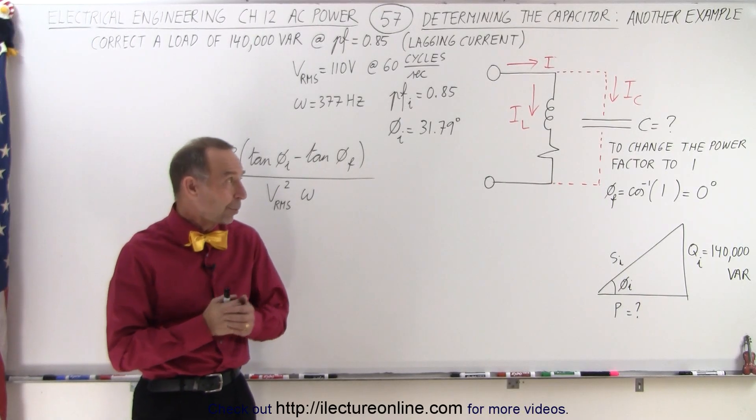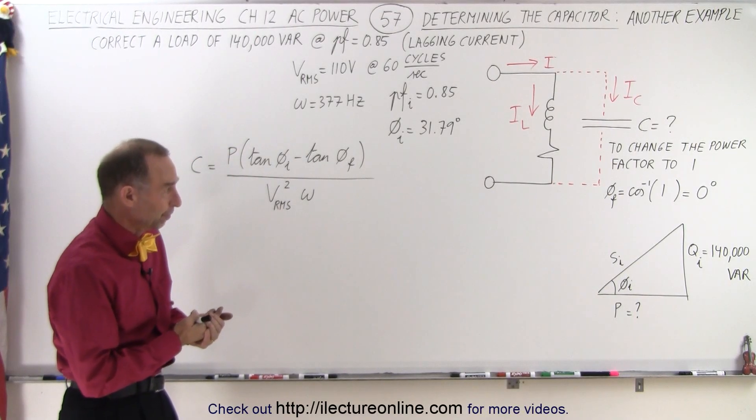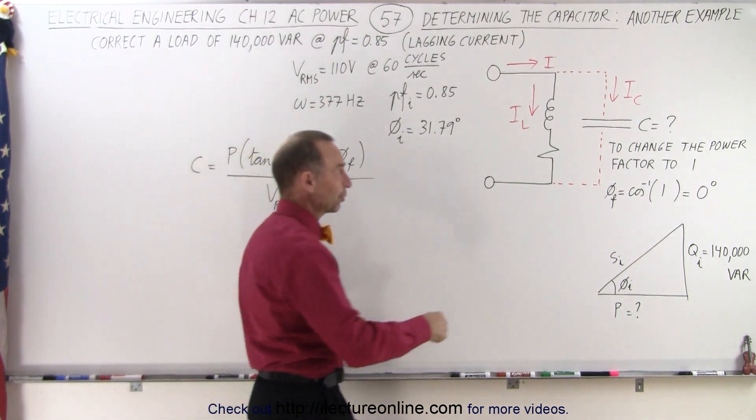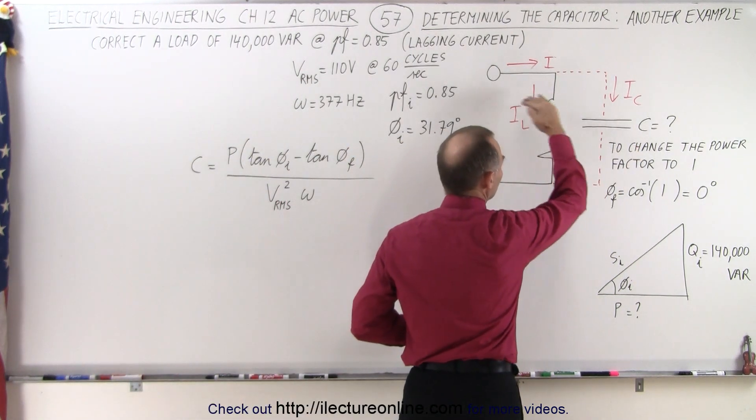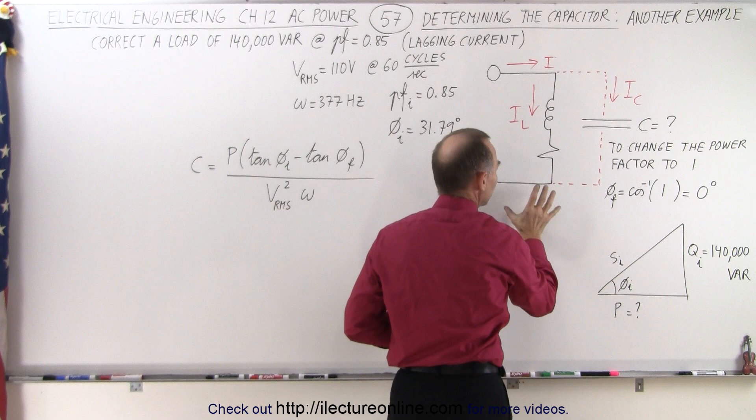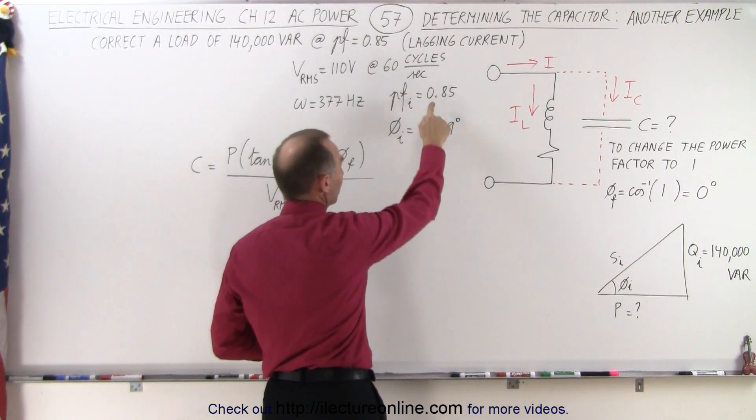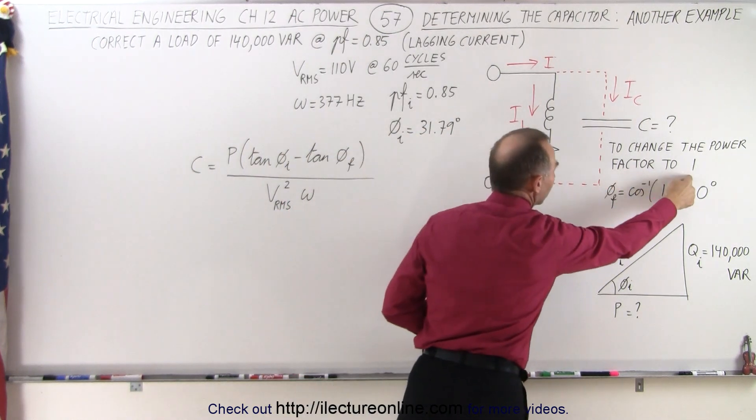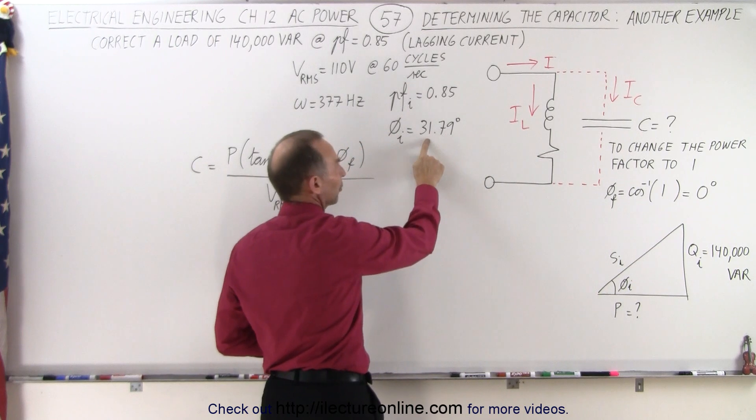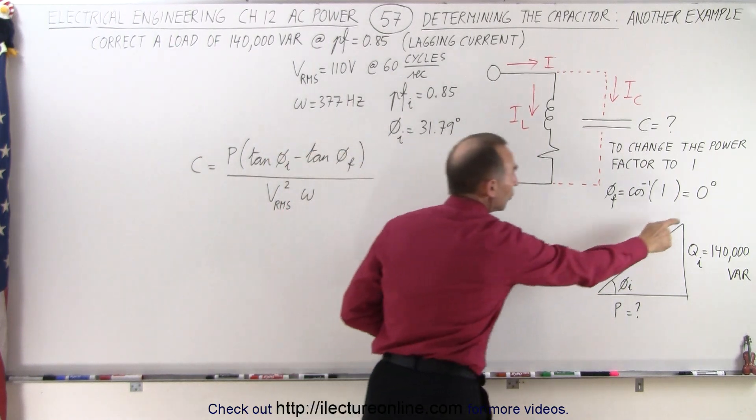Welcome to our lecture online. Now let's try our hand at a different example. What we're trying to do is find the correct capacitor which will take our initial circuit and change it so that the power factor changes from 0.85 to 1, which means that the phase angle goes from 31.79 degrees to 0 degrees.